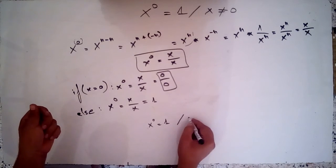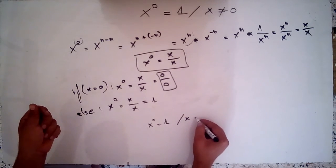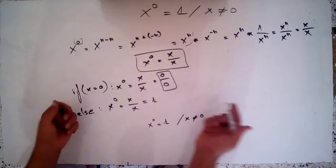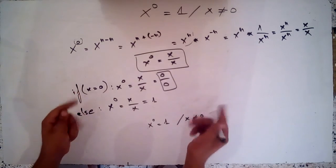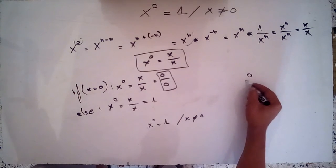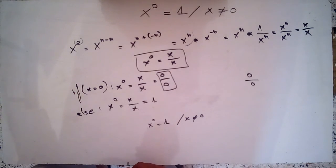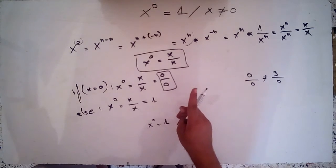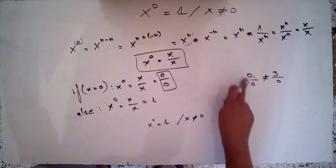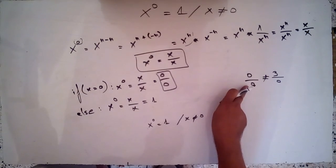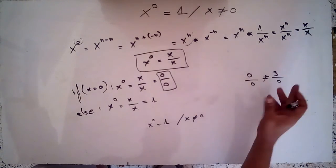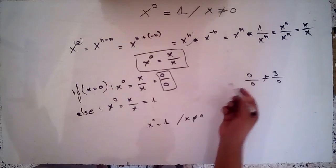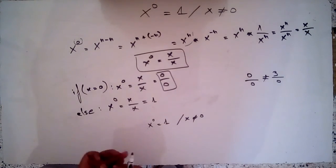So that's it. In the next video we will talk about what the number 0 over 0 means, and what 3 over 0 means, because there is a difference between them. 0 over 0 is undefined and 3 over 0 is also undefined, but they are different. We will discuss that in the next video on our channel. See you later.